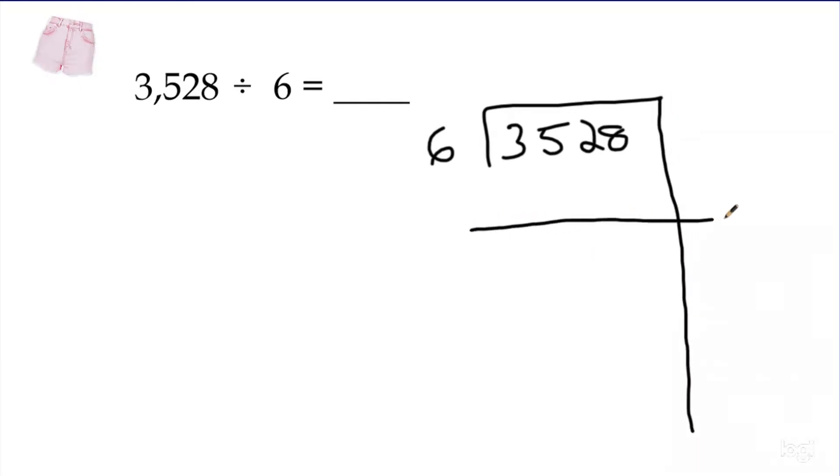All right. And again, I'm trying to think to myself, how many groups of six can I take out of 3,528? It helps if you take the biggest chunk possible. You can build your answer any way you want as long as you're making groups of six. But I know six times six is 36, which six times 600 would be 3,600. But that's too big. So I'm going to go ahead and do 500 right here.